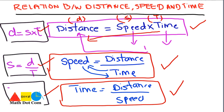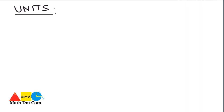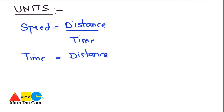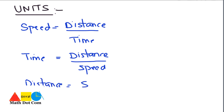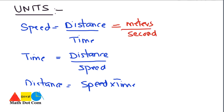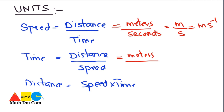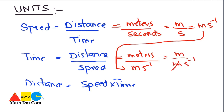Now let's see how you can find the units. Speed is equals to distance over time. Basically, distance is calculated in meters and time in seconds, so the unit of speed is meter per second. For time, distance is in meters and speed is in meters per second, so you write meter over meter per second — the meters cancel out and time will be calculated in seconds, or hours or minutes depending on the context.